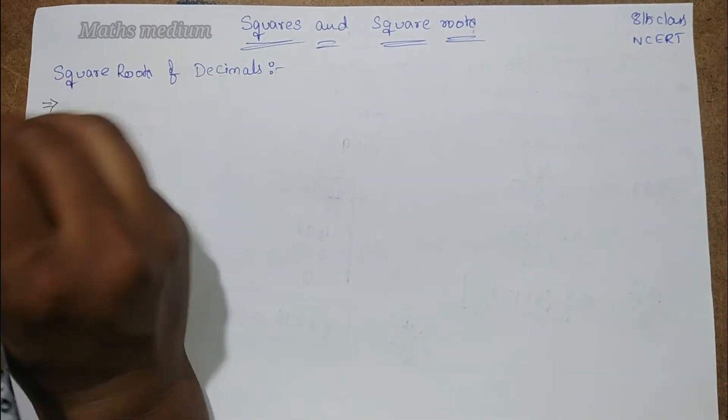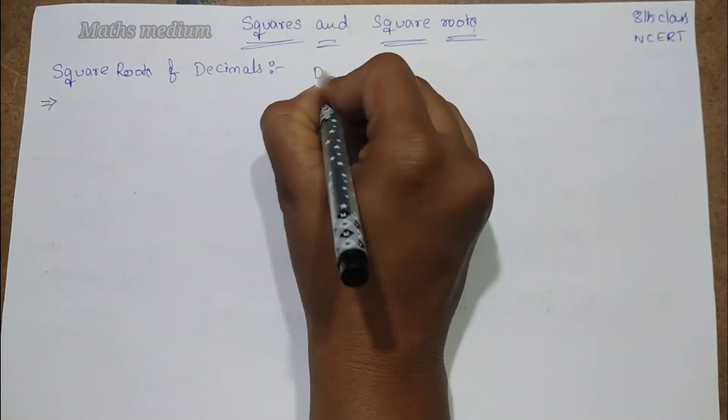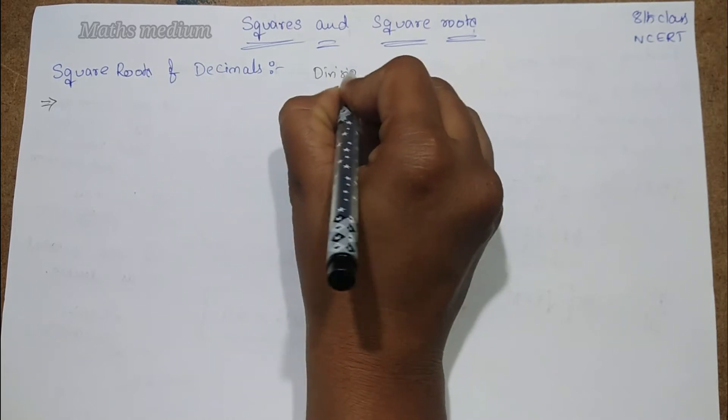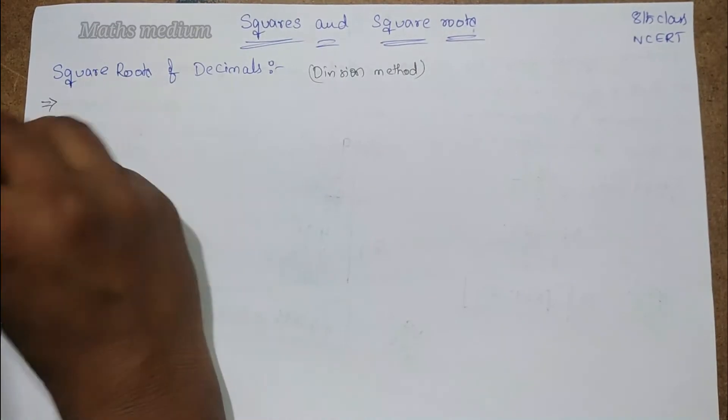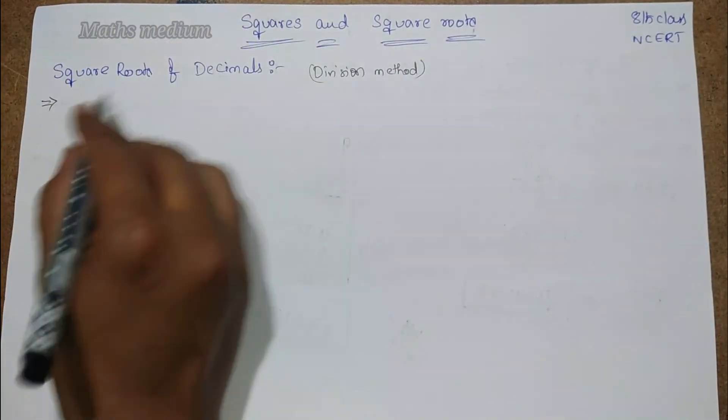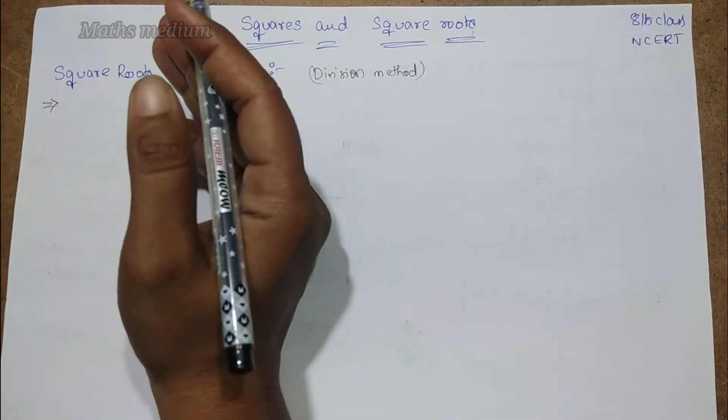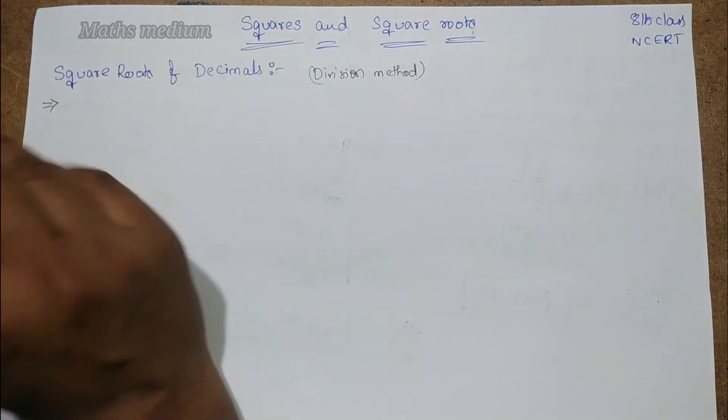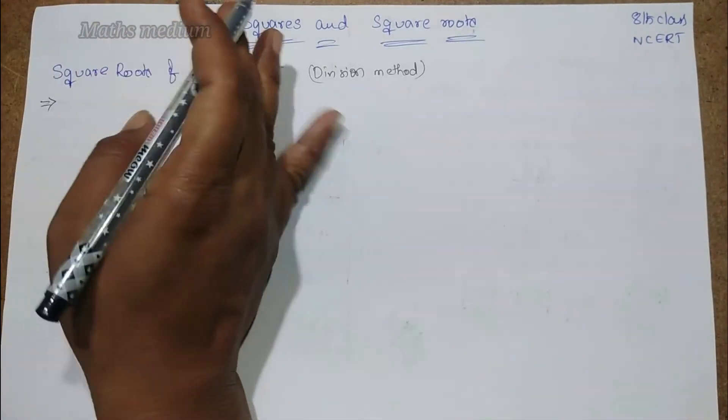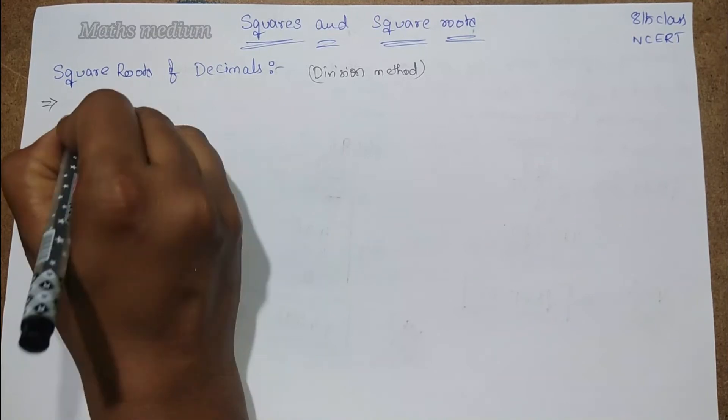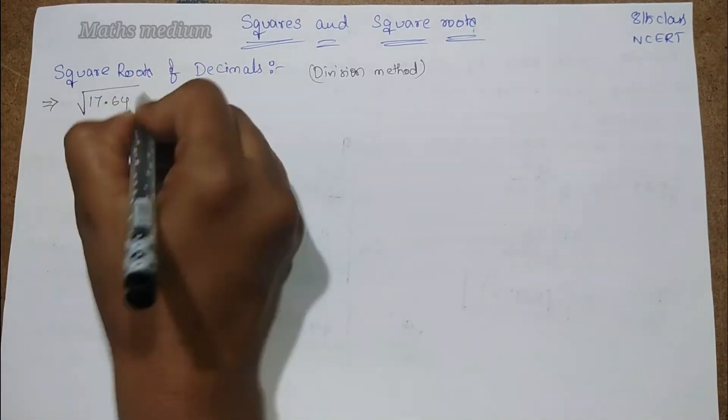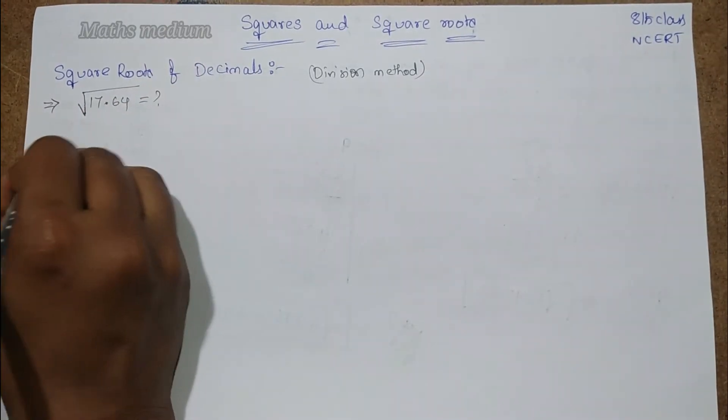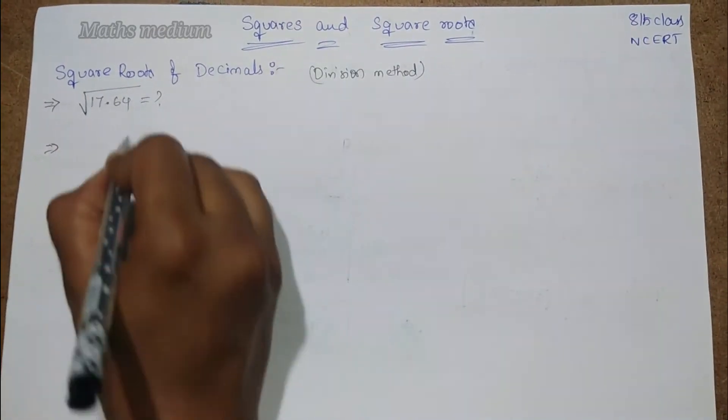So, let's start. Now, this is according to the division method for the square roots. Let's start with the division method. I hope you are familiar with the division method of square roots. Let's take one number, then you will get the better understanding about how to get a square root of a decimal. I am taking 17.64 as the question. We have to find the root of 17.64. Now, take the square root division method.